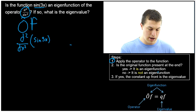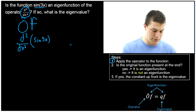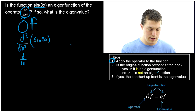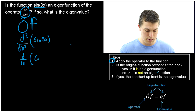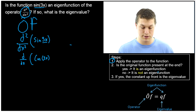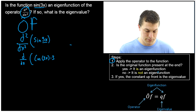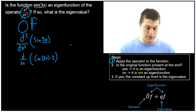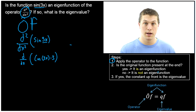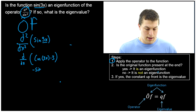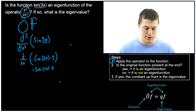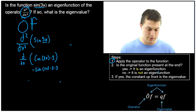We apply the operator and see what we get. Taking the first derivative of sine of 3x: sine becomes cosine of 3x, and by the chain rule we multiply by 3. Taking the next derivative: the derivative of cosine gives negative sine of 3x, and applying the chain rule again gives another factor of 3. Combining, we get negative 9 times sine of 3x.